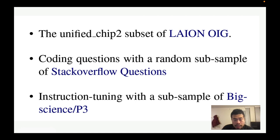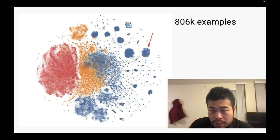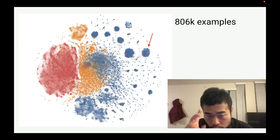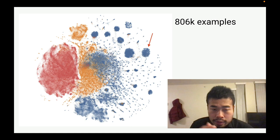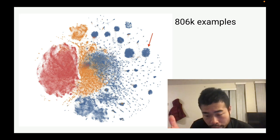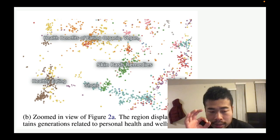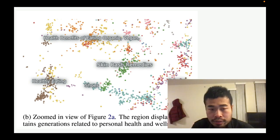GPT-4ALL is a training dataset for assistant-style chatbots with instruction following data, distilled from GPT-3.5 turbo, which is ChatGPT. According to their technical report, they train on three datasets: Stack Overflow questions, the BigScience P3 dataset, and Unified Chips. They use GPT-3 to generate responses, giving them around 800,000 samples — which is large. When you reduce these three datasets to two dimensions, you can see their semantic similarities: they're quite far apart from each other, meaning the training data is very diverse and covers many different topics.